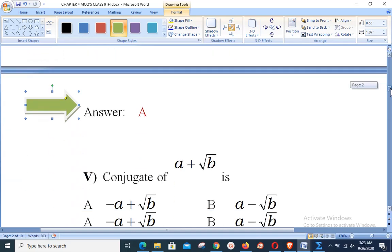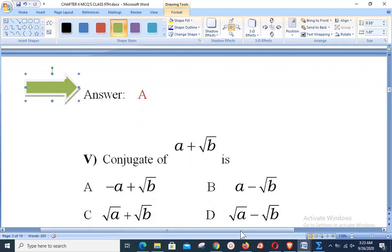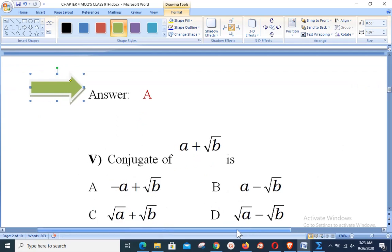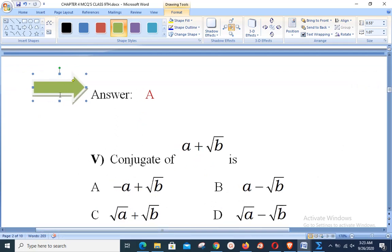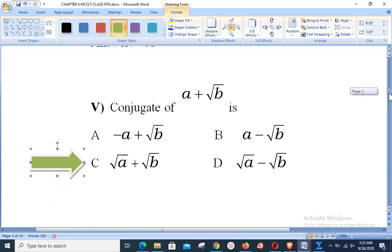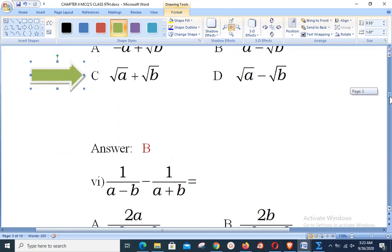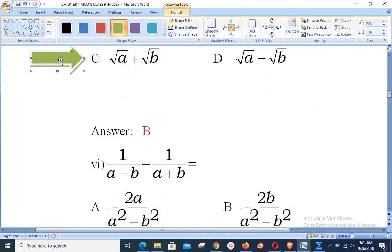Going ahead towards the next objective, that is objective number 5. It says conjugate of a plus square root b is dash. Dear students, very simple: the term inside the radical, its sign is to be changed to take the conjugate. So it will be very simple: a minus b, and that is available in option B.